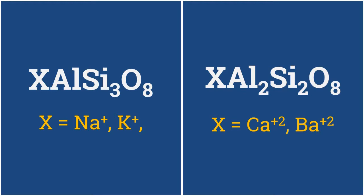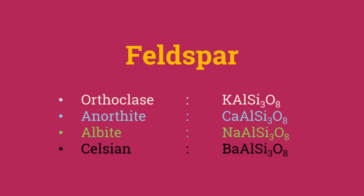However, when two silicon atoms have been replaced, the formula unit becomes XAl2Si2O8, which is balanced by calcium.